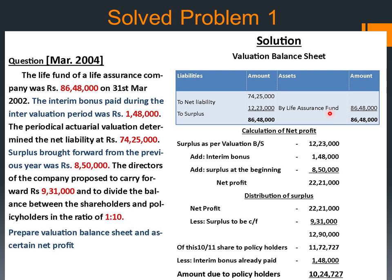First, we can prepare the valuation balance sheet. On the credit side, by life assurance fund — given in the question — Rs 86,48,000. On the liability side, net liability — that is actuarial valuation — Rs 74,25,000. So the balance figure is on the debit side, which means it represents profit, that is Rs 12,23,000. Surplus as per valuation balance sheet is Rs 12,23,000. Add interim bonus — given in the question — Rs 1,48,000. Add surplus at the beginning, that is opening balance of profit, Rs 8,50,000. So the net profit is Rs 22,21,000.